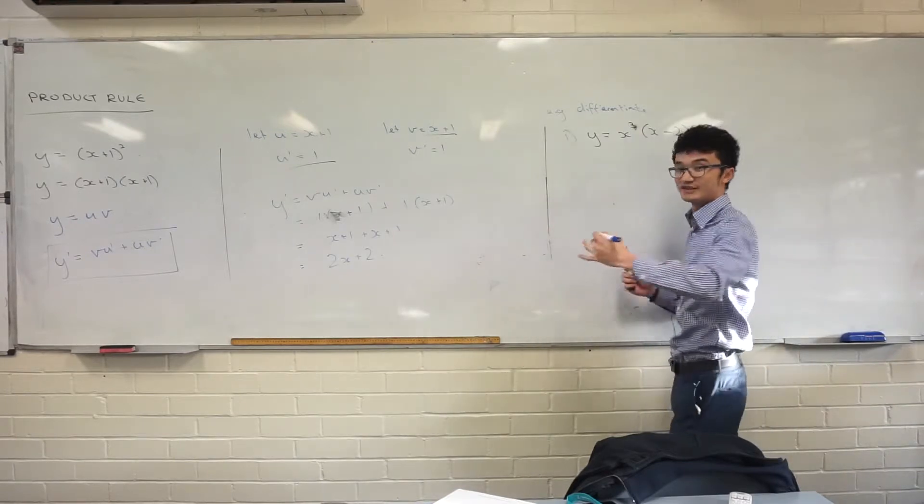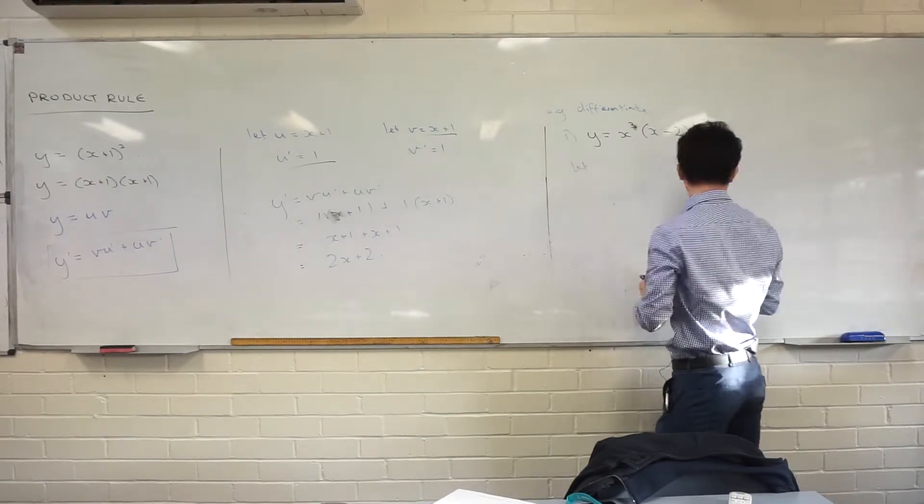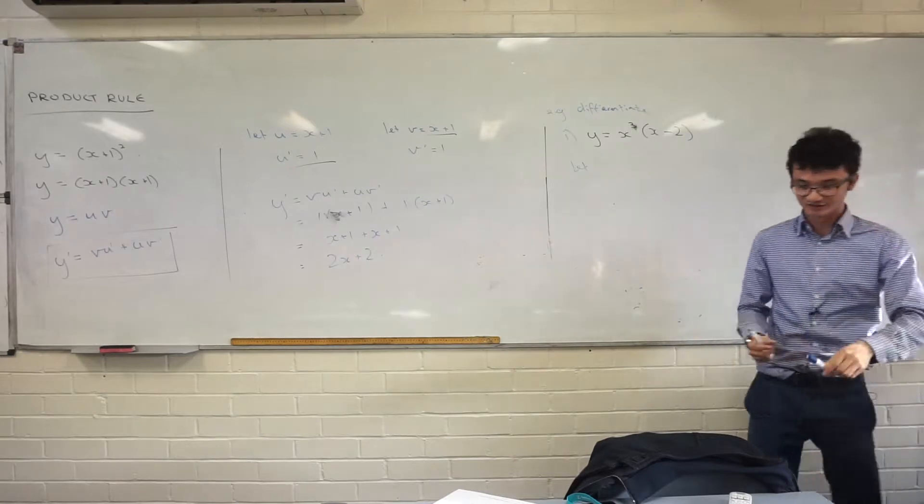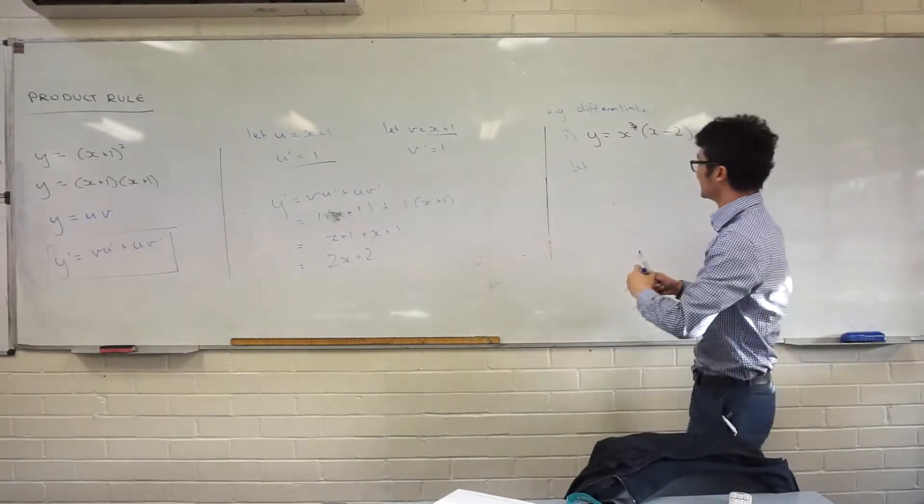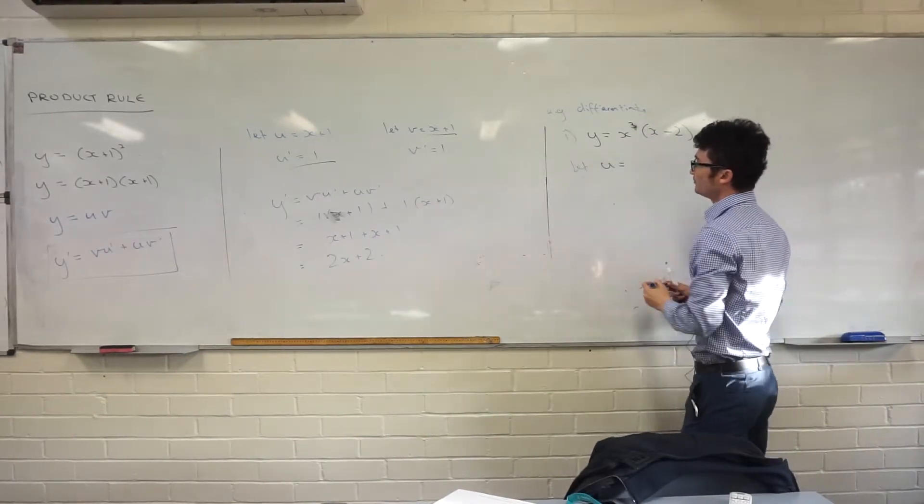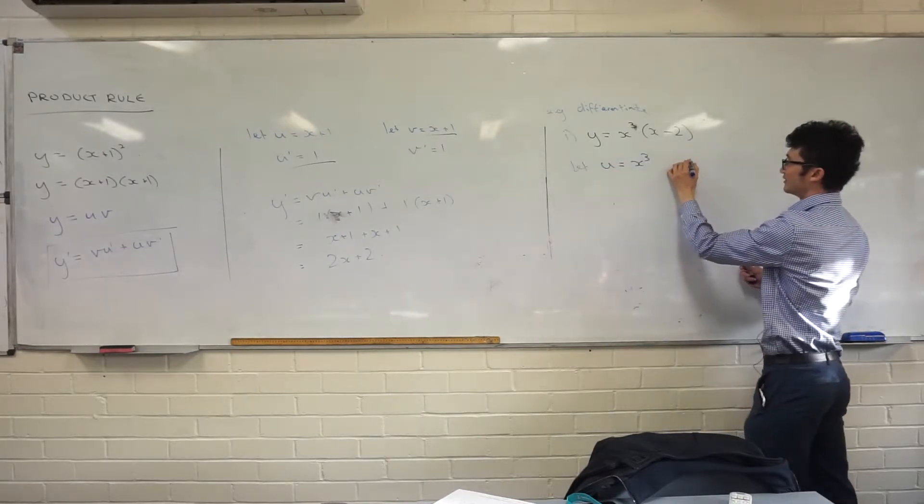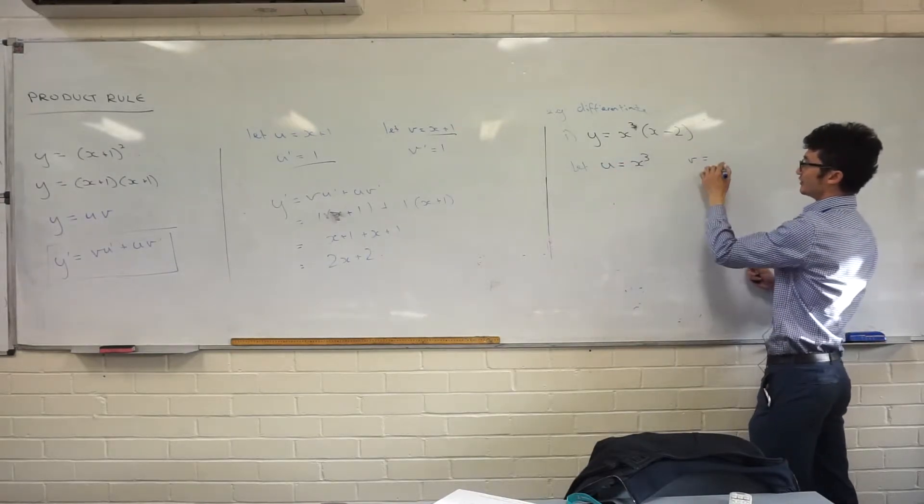x cubed and x minus 2. That's right, James. So we say, again, same idea. We let, I think I'm running out of ink here. Let's use this guy. We let u equal to one of them, say x cubed. We let v equal to the other one, x minus 2.